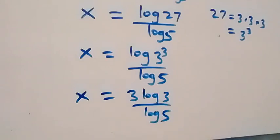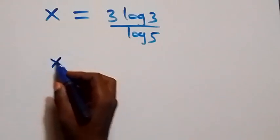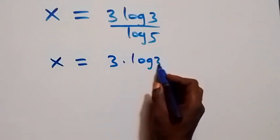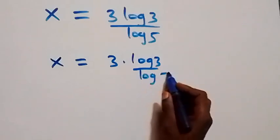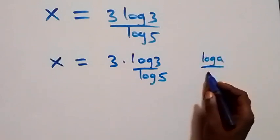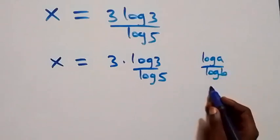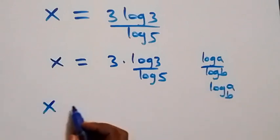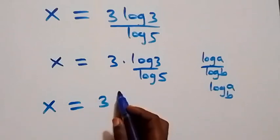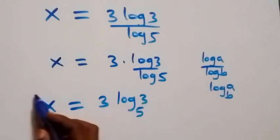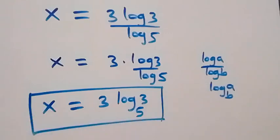This is the same as writing x equals 3 times log 3 over log 5. When we apply the change of base formula, log 3 over log 5 becomes log base 5 of 3. Therefore, we have the value of x in this given problem as x equals 3 log base 5 of 3.